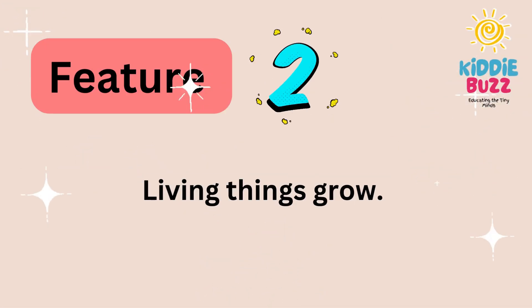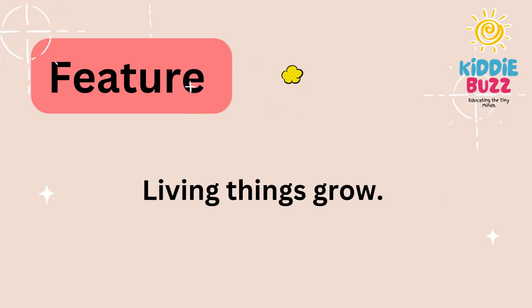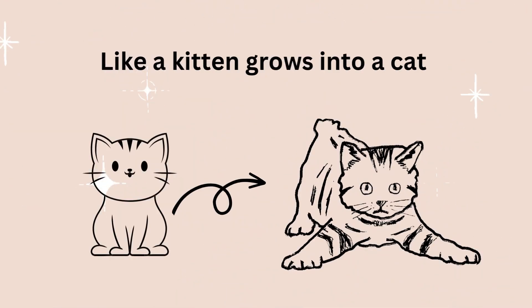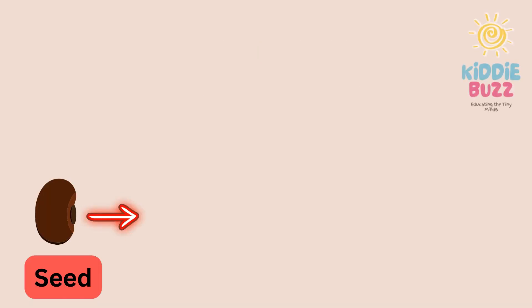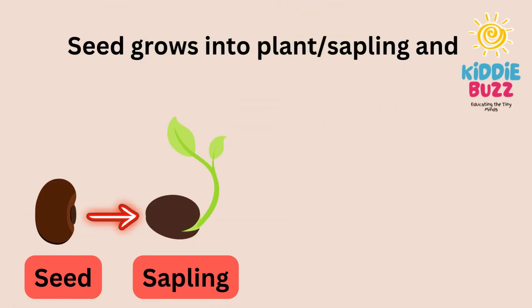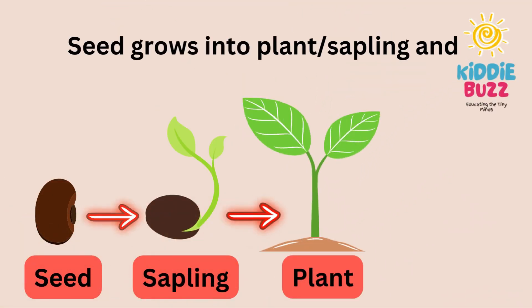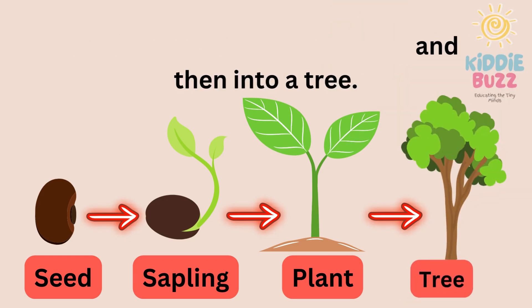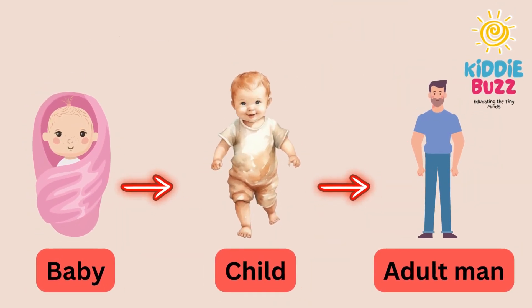Another feature is living things grow. Like a kitten grows into a cat. Similarly, a seed grows into a sapling, then a plant, and then into a tree. A baby grows into a child, and then into an adult man.